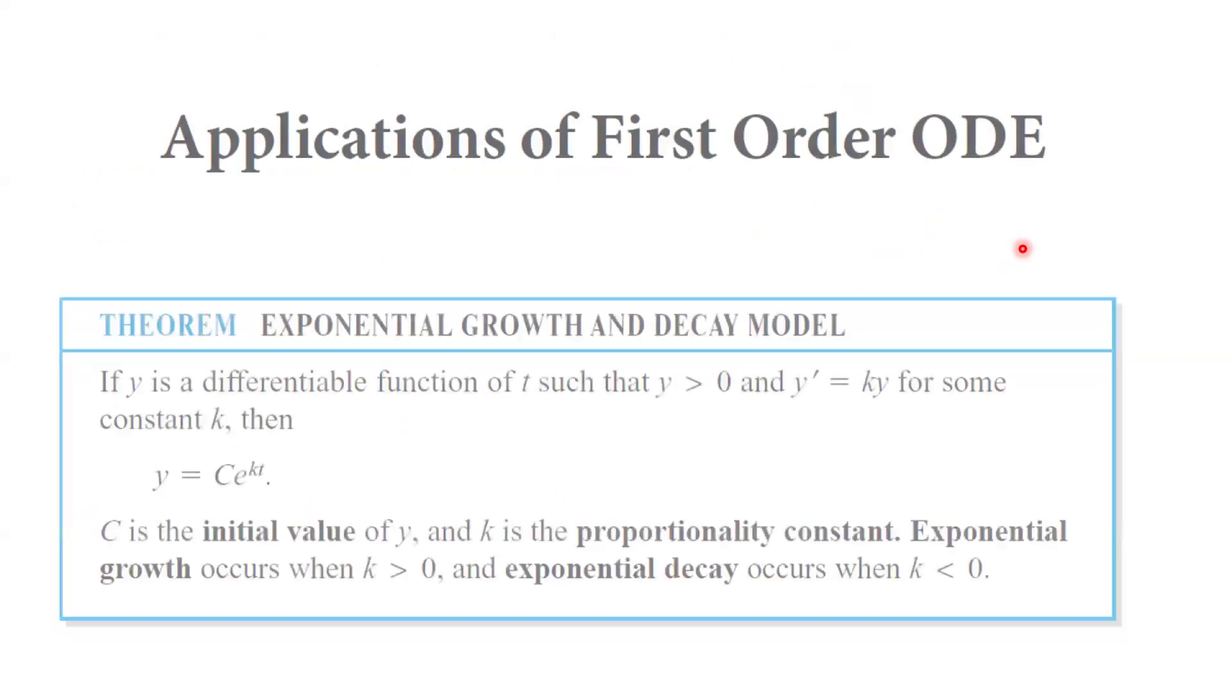Let's take a look at the theorem again. When you have y prime equals ky, we can solve this and get the mathematical model y equals c e to power kt. c is called the initial value of y. k is the proportionality constant. If k is positive, you get exponential growth. And when k is negative, we get exponential decay.